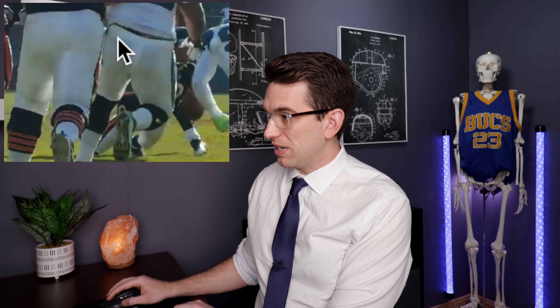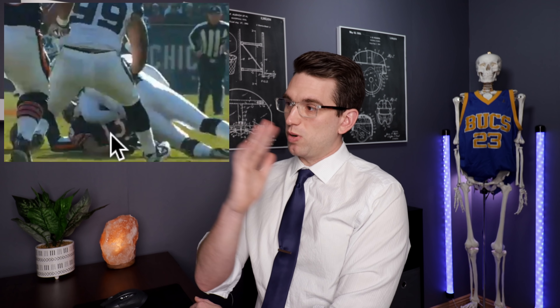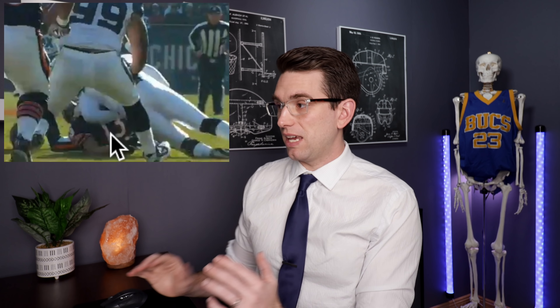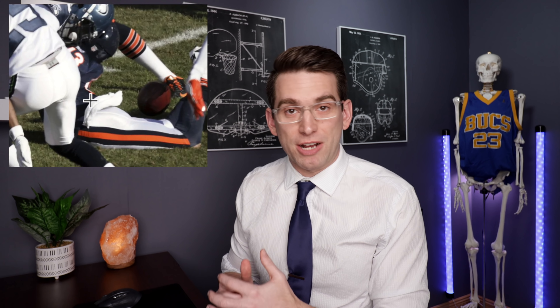Knox also got hit more from the side, which added an additional lateral bending component to his injury and probably contributed to the fracture. Here we can see the Seattle defender coming in to hit him — Knox's lower body has just made contact with the ground but his upper body is still free to bend and take that hit. The defender comes in a little bit from the side, so it wasn't just pure hyperextension, but Knox's body also had a component of lateral bending. This is a very excessive amount of hyperextension, and when we go to our anatomy model, we'll see why that results in this fracture and injury.